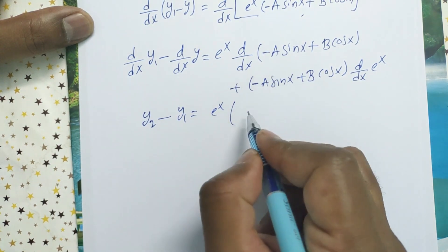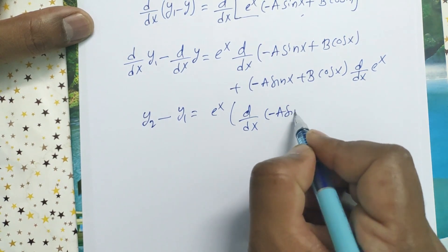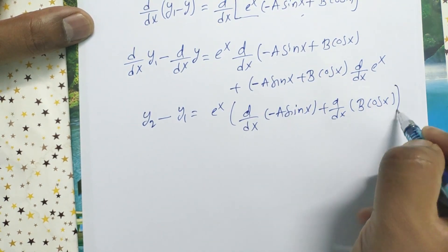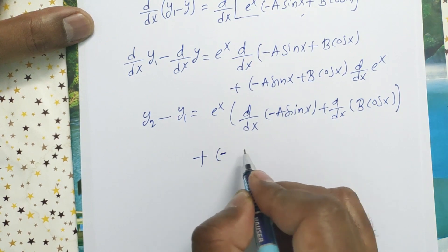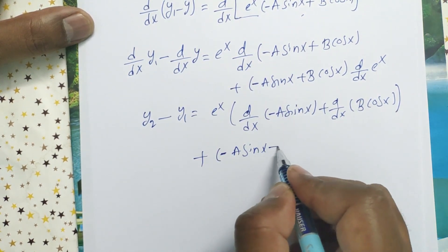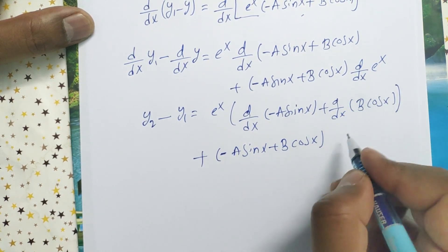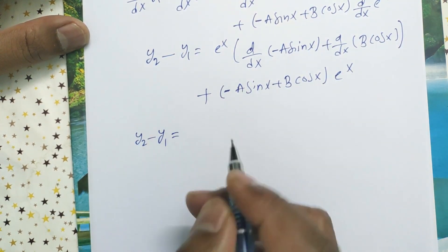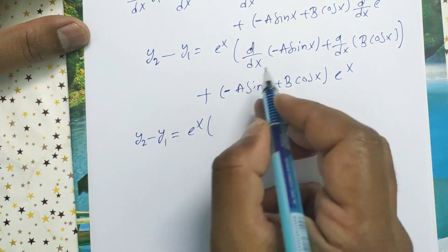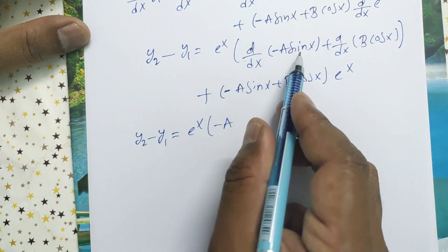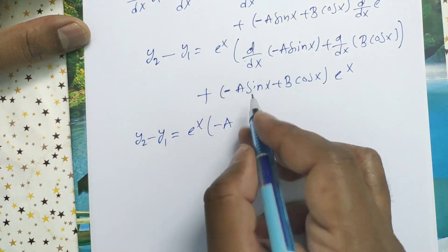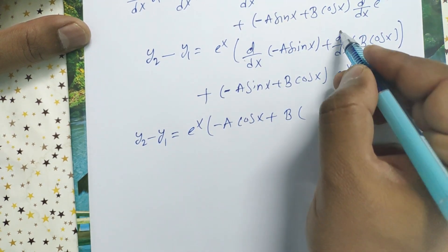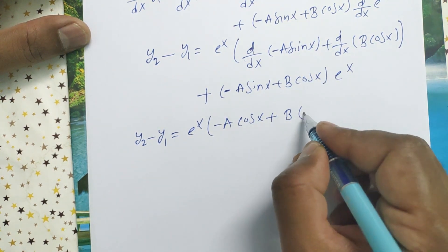Now d/dx(-a sin x) = -a cos x and d/dx(b cos x) = -b sin x. So the derivative term becomes eˣ(-a cos x - b sin x), and the second part is eˣ(-a sin x + b cos x).